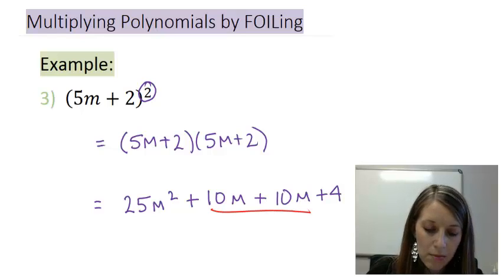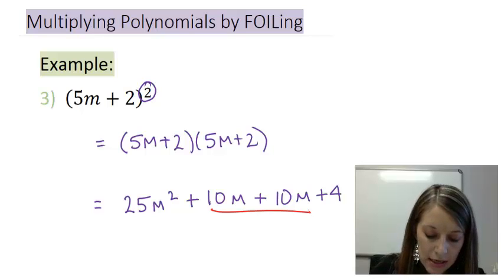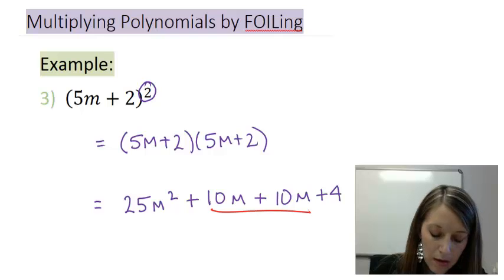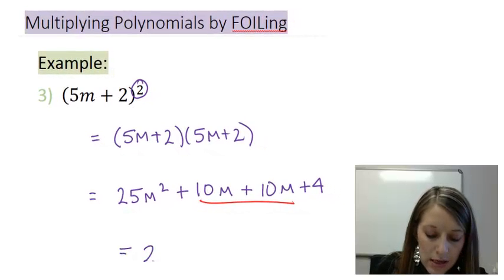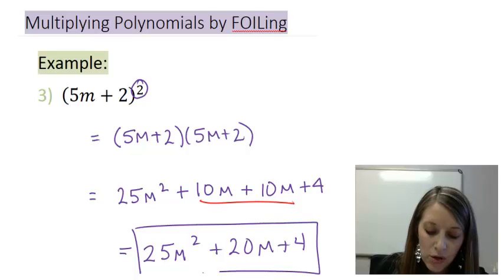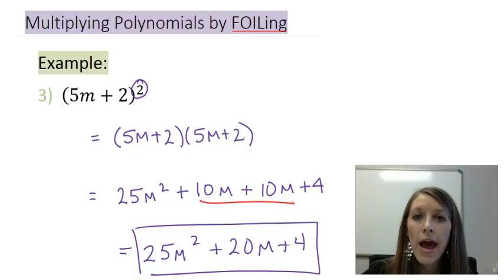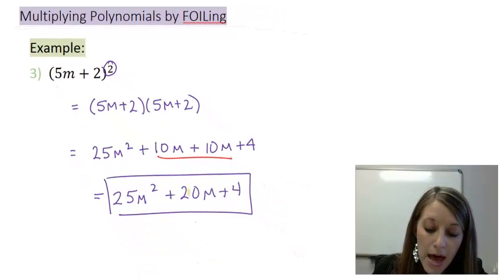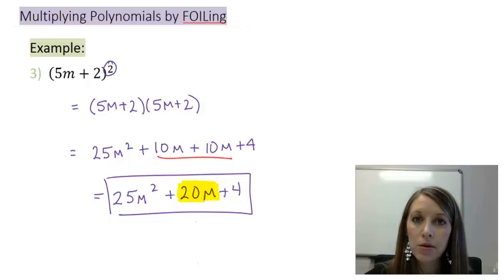Now, I combine my two middle terms, copying everything else down in descending order. So, this gives me 25m squared plus 20m plus 4. So, this is your official answer. And you can see why, if you distribute the power, you get the wrong answer. Because you lose a whole term. You lose that middle term here.